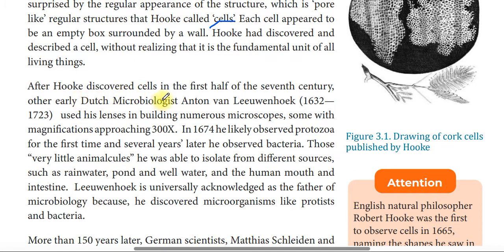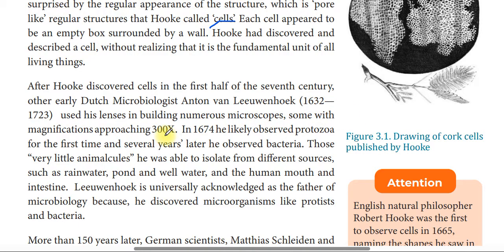After Hooke discovered the cell in the first half of the 17th century, the Dutch microbiologist Antony Van Leeuwenhoek, from 1632 to 1723, used his lenses in building numerous microscopes, some with a magnification approaching 300 times.